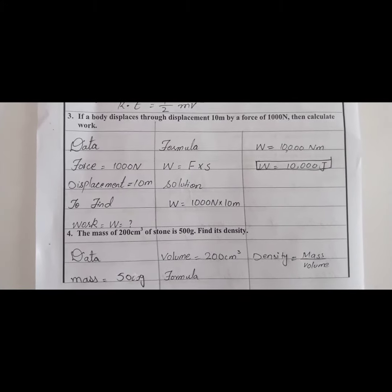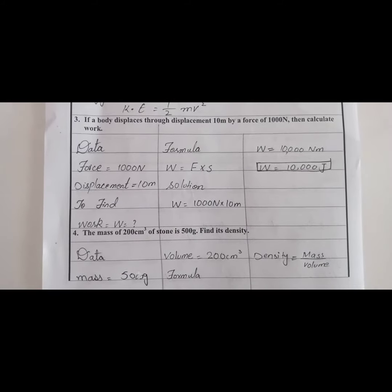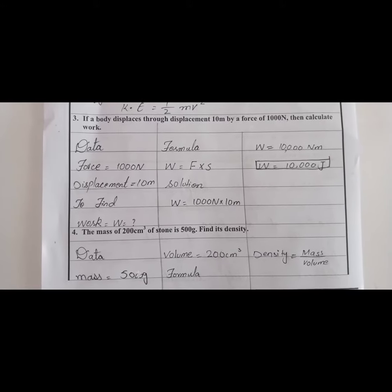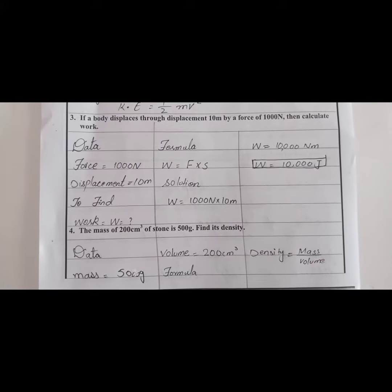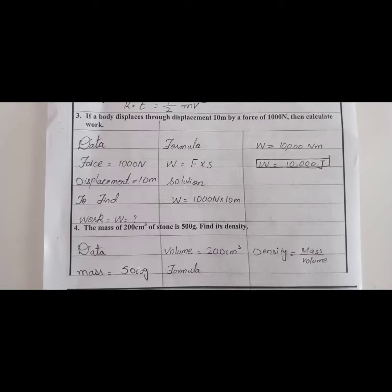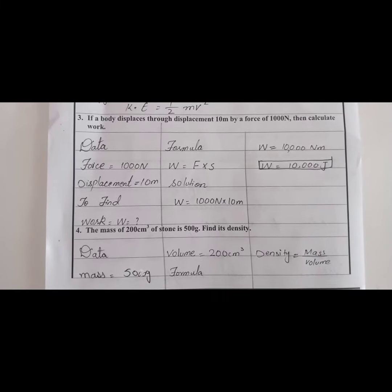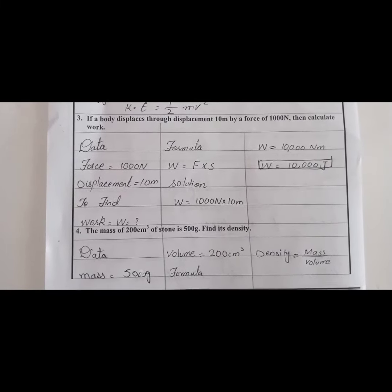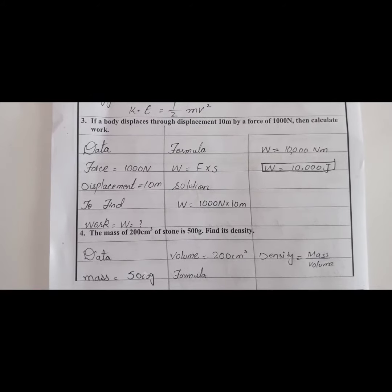Now we will move to question number 3. Question number 3 is: if a body displaces through a displacement of 10 meters by a force of 1000 newtons, then calculate work. First of all, you have to write the data. Force is equal to 1000 newtons, displacement is 10 meters. To find work, the formula for work done is W = F × S.